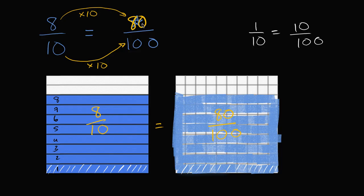So eight times ten is eighty, ten times ten is a hundred. Eight tenths is the same thing as eighty hundredths.